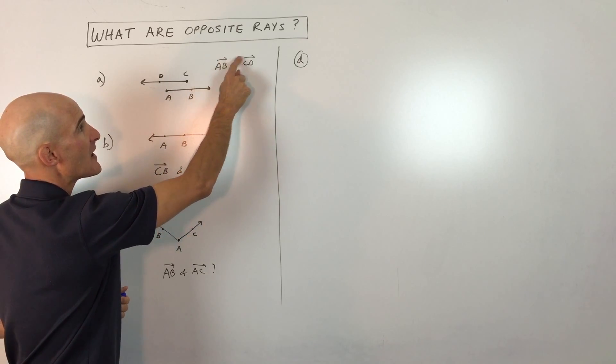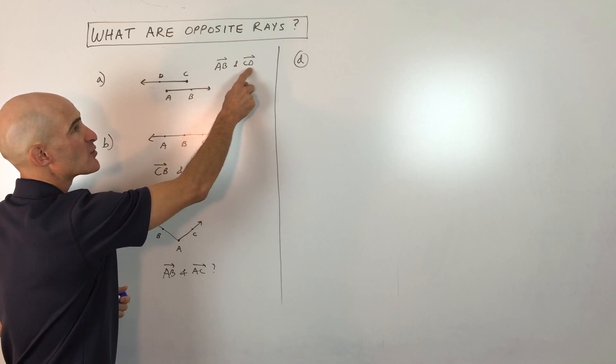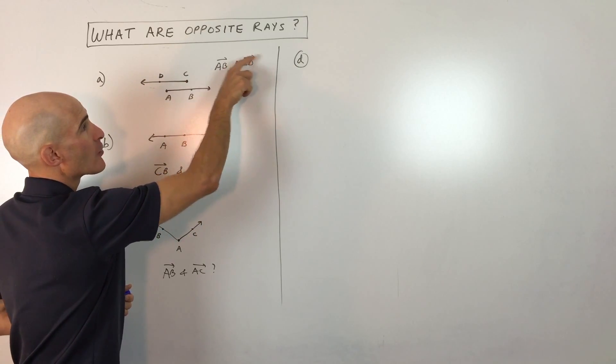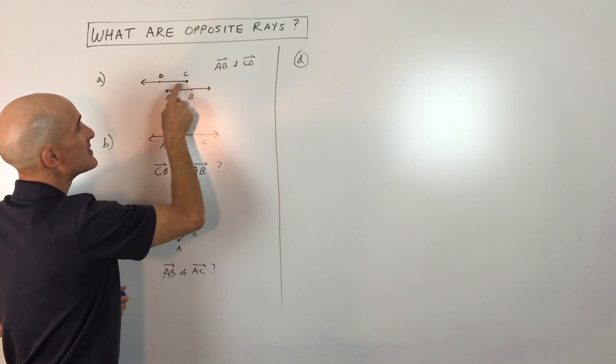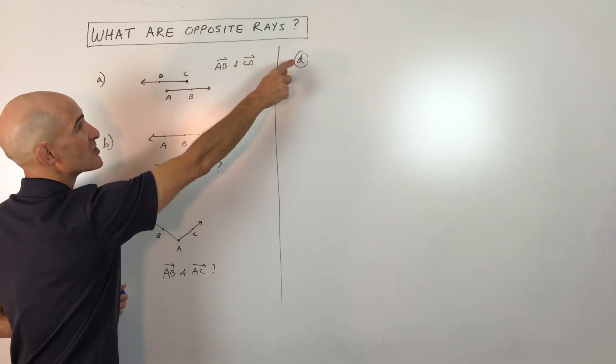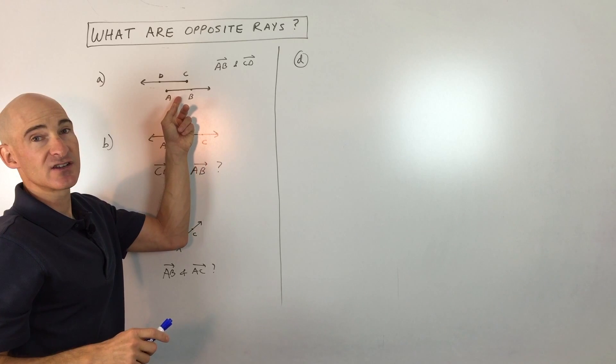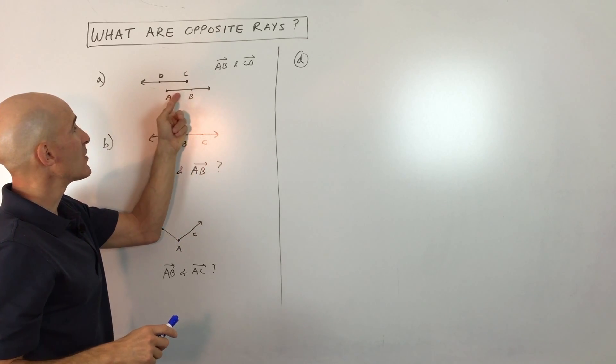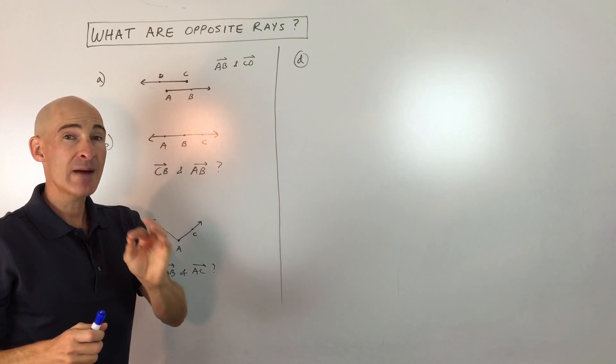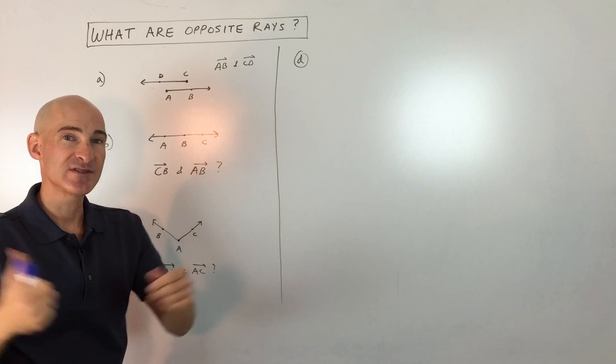It's called the endpoint and it goes towards B and keeps going in this direction. So we have it written as ray AB and here we have ray CD. Now notice when you write the ray, you always draw the arrow going to the right, and you can see it's starting at point C, which is right here, heading towards D and it keeps going in that direction. But when you look at these rays, these are technically not opposite rays, and the reason they're not opposite rays is because to be opposite rays you have to start at the same endpoint and go 180 degrees opposite.